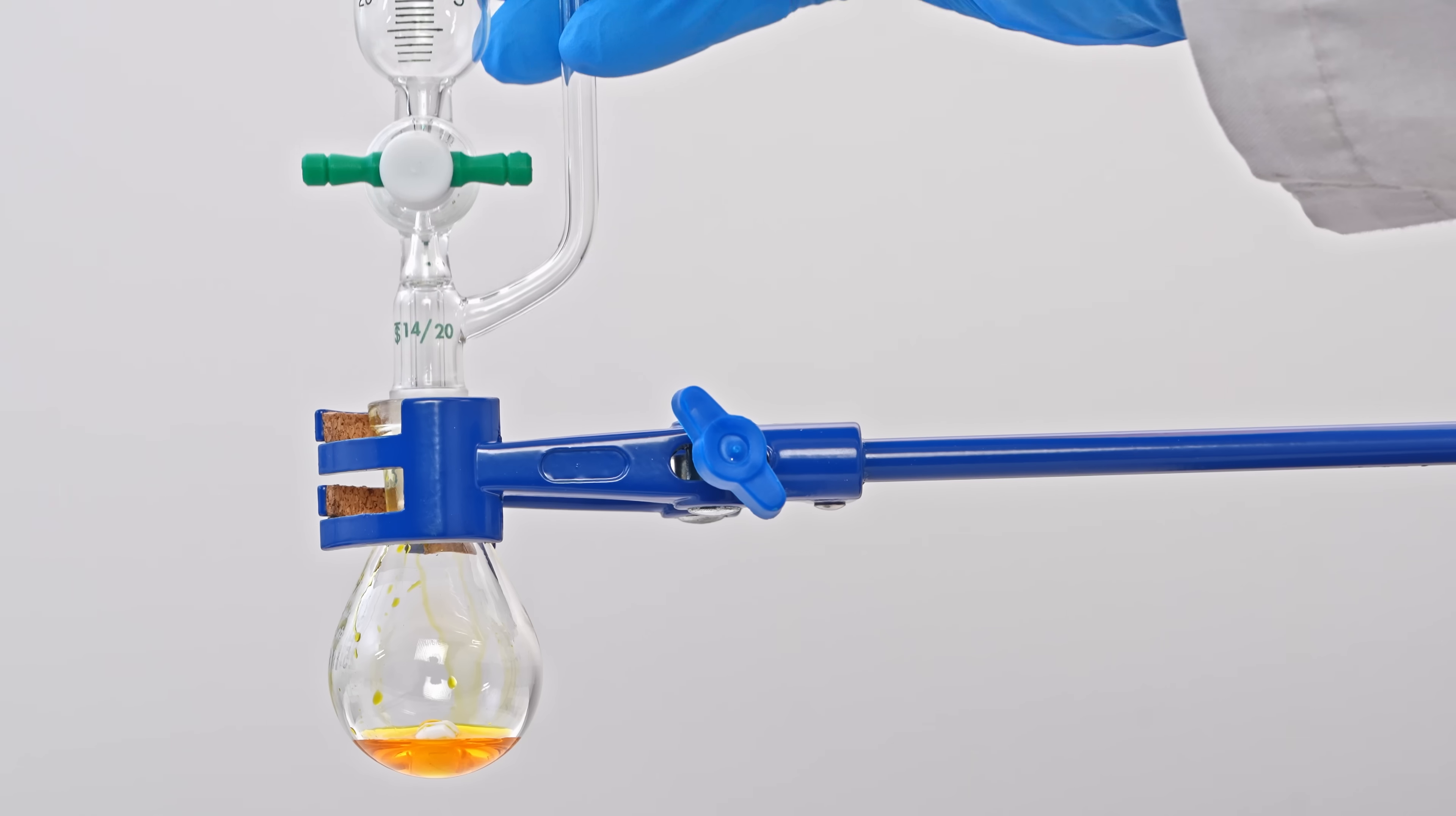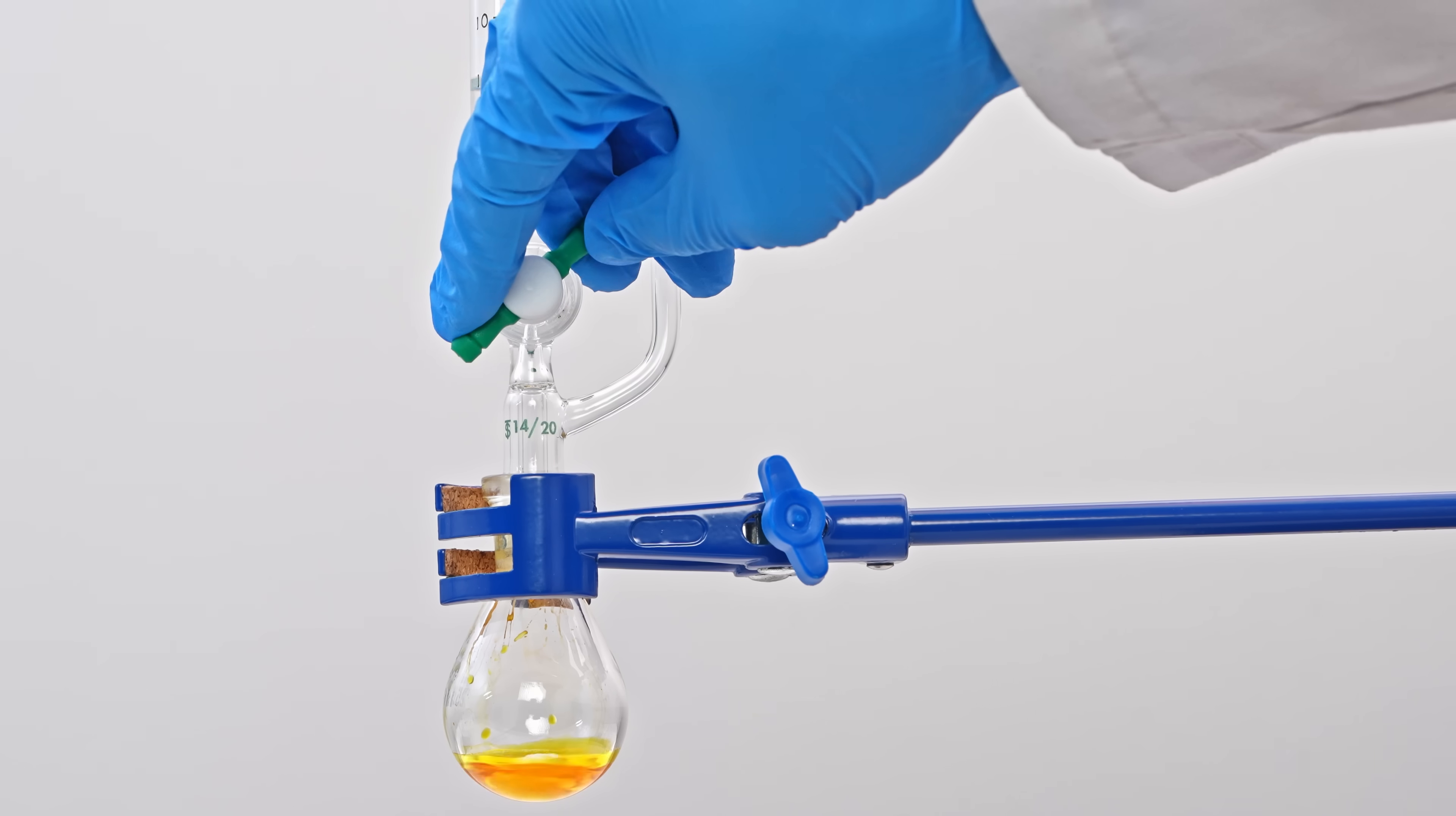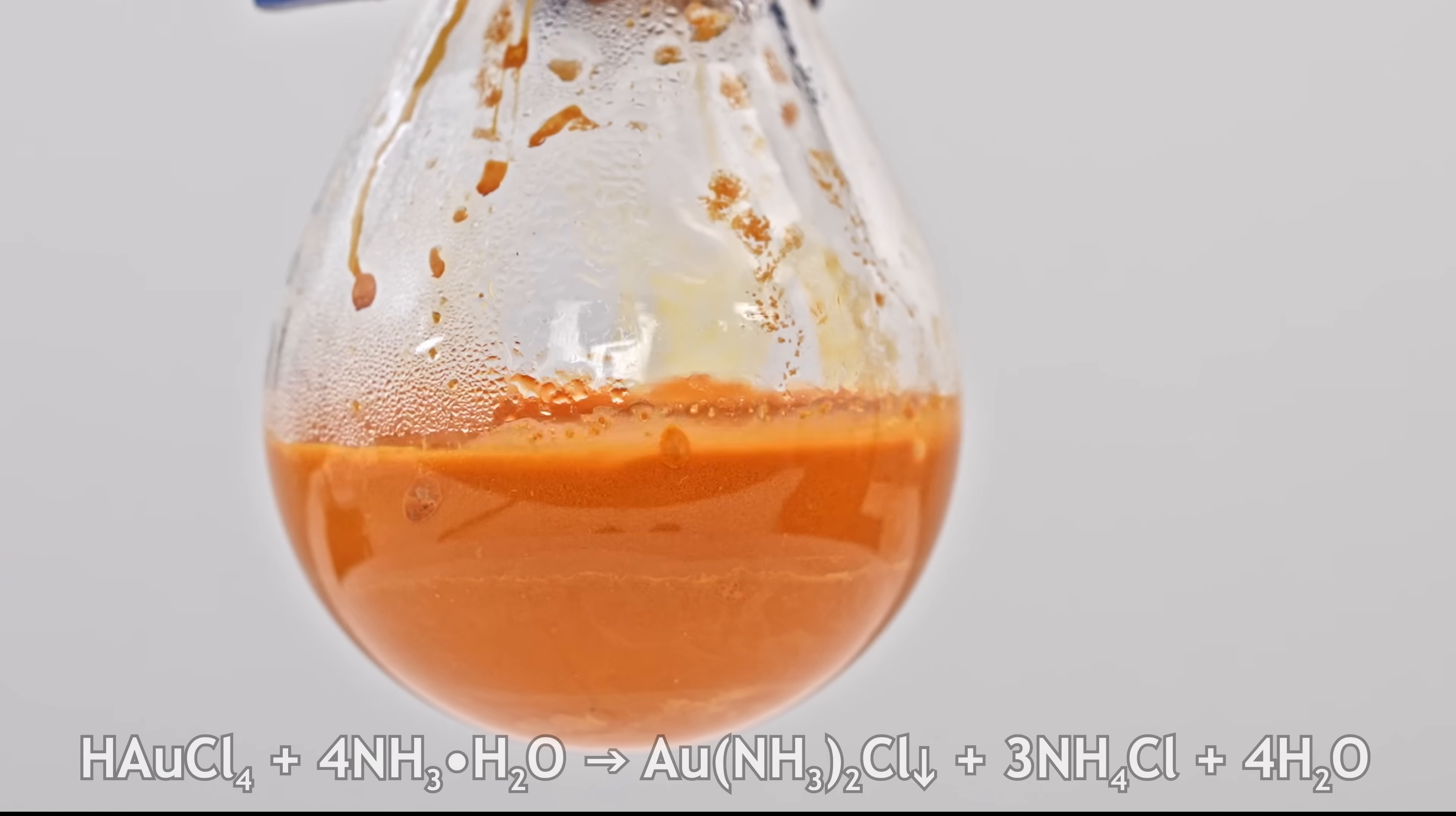For this, I dissolved chloro-uric acid crystals in water. Then, while stirring, I carefully added the ammonia solution drop by drop. As the reaction proceeded, an orange precipitate started forming in the mixture.